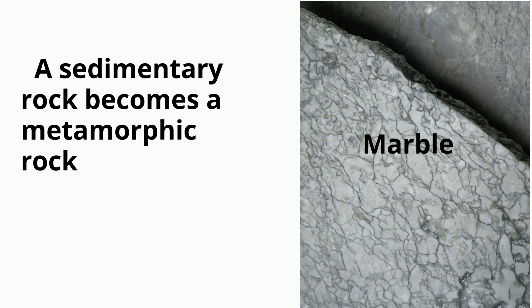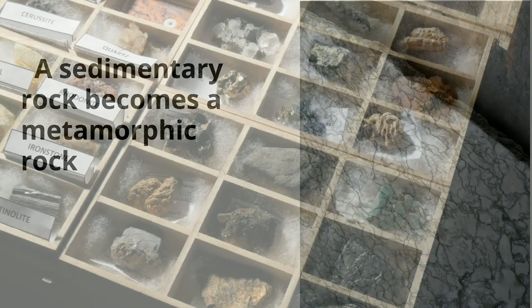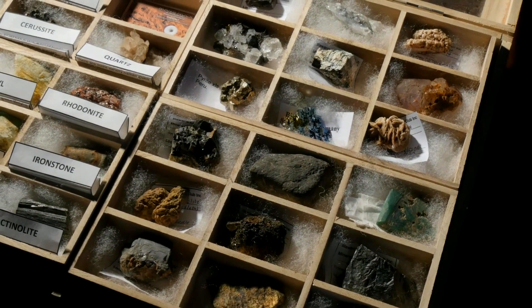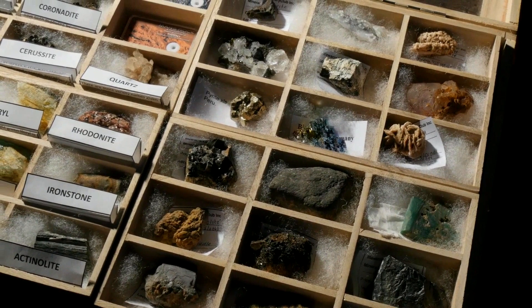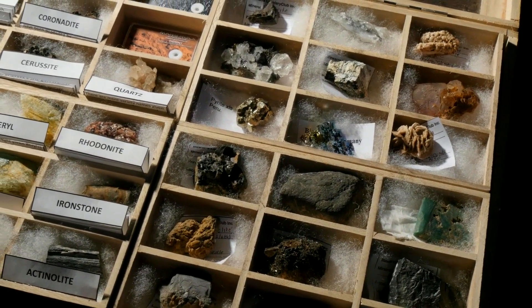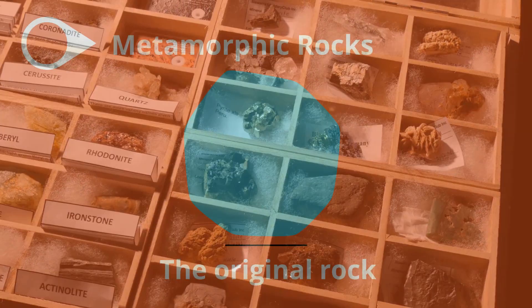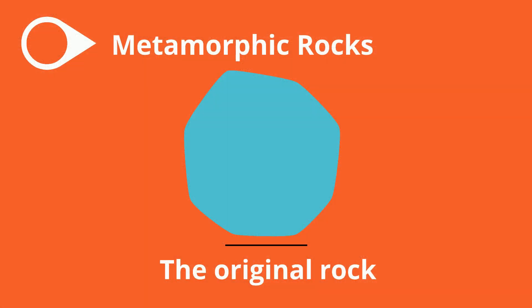Sedimentary, metamorphic, and even igneous rocks can all become new metamorphic rocks when exposed to heat and pressure. The original rock is referred to as the protolith, but it is commonly referred to as the parent rock.